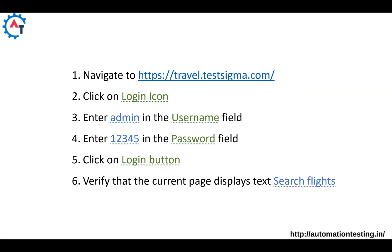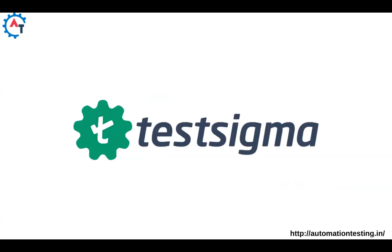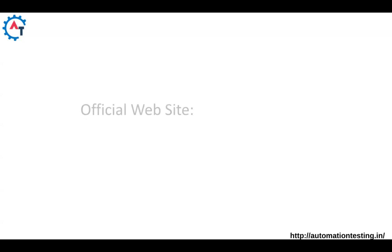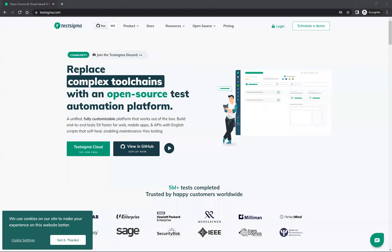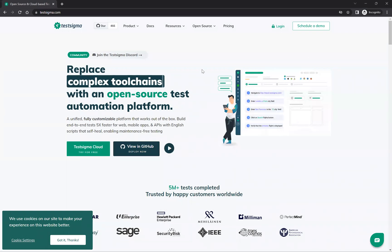We are going to talk about one of the best tools for no code automation, and that is Test Sigma. This is one of the no code automation tools. In our upcoming videos, we will discuss in detail about Test Sigma, but here is just an introduction. We'll see what the official website of Test Sigma looks like — the official website is testsigma.com.